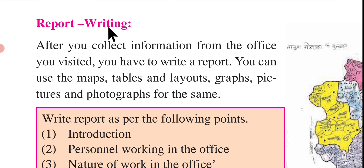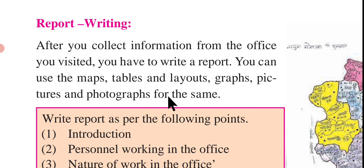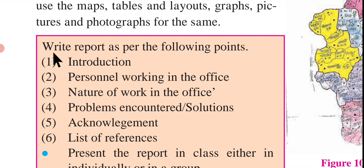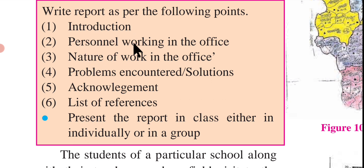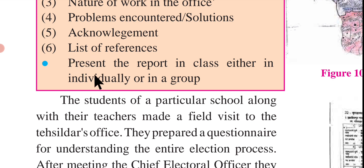Report writing: After you collect information from the office you visited, you have to write a report. You can use maps, tables and layouts, graphs, pictures and photographs for the same. Write the report as per the following points: Introduction, personnel working in the office, nature of work in the office, problems encountered and solutions, acknowledgement, and list of references. Present the report in class either individually or in a group.